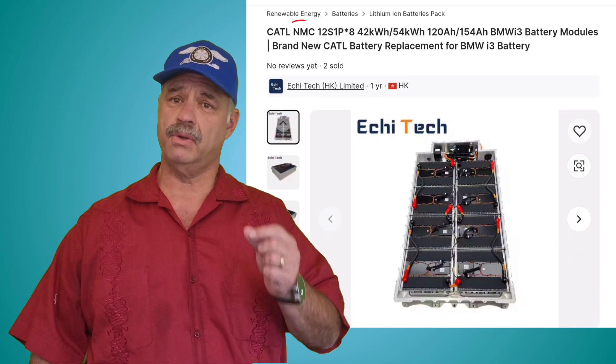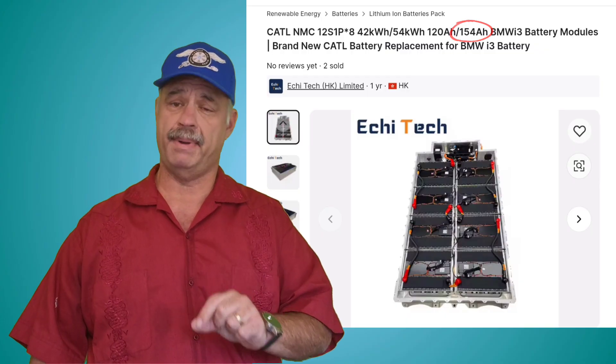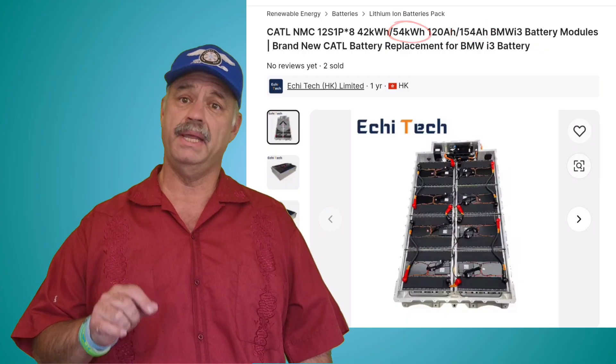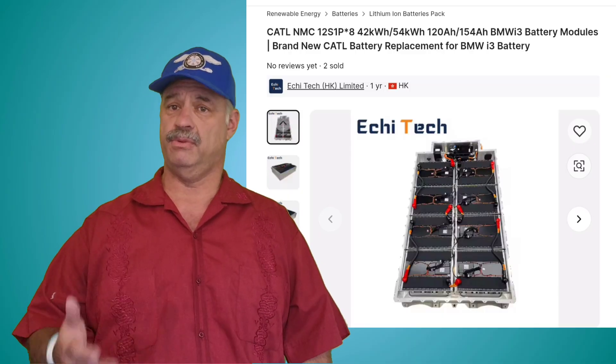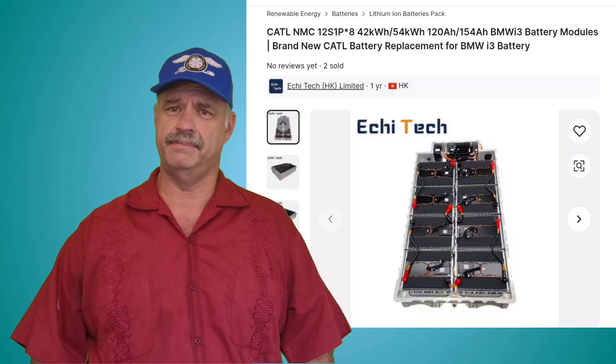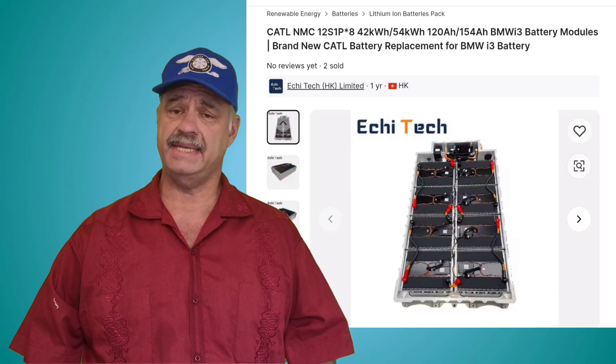So you can imagine my delight when I found out that there is a Chinese manufacturer selling i3 batteries that takes advantage of these improvements in battery technology. Martigui Manufacturing has developed a nickel-cobalt-manganese, 154-amp-hour, 54-kilowatt battery that is designed to fit in the same footprint as the i3's original Samsung battery pack. This new battery pack is made by CATL.